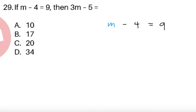Now, this is just a very simple algebra item, so we have the given condition m minus 4 equals 9, so we're going to solve for m. So m minus 4 equals 9, we add 4 to both sides.